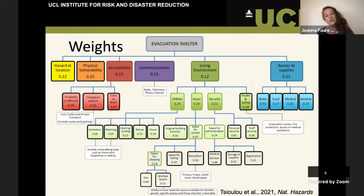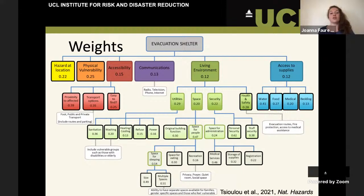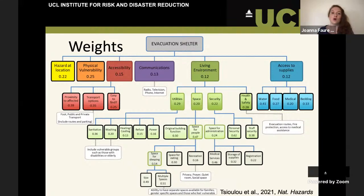There are some quite interesting things when we start going into these weights. For example with space, there's a fairly even spread between the amount of space and having multiple spaces — the need for multiple spaces comes from protecting individuals, considering gender separation, whether to keep families together, and personal security, which in some areas people would really be concerned about when going to an evacuation shelter. The survey included many people with direct experience in the Philippines, including people who had worked in shelters, so we really did get an inside view.